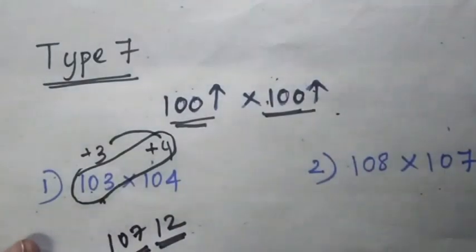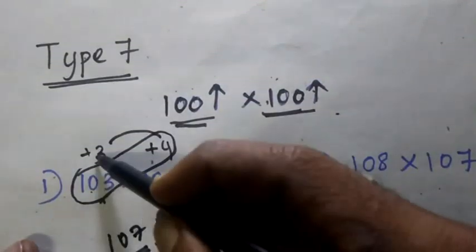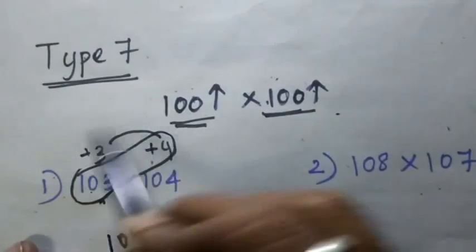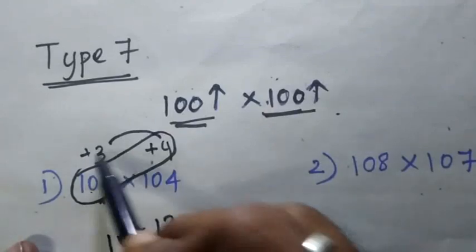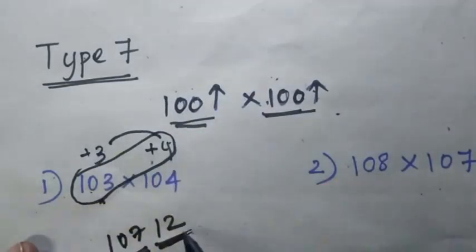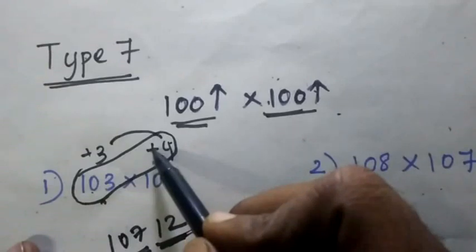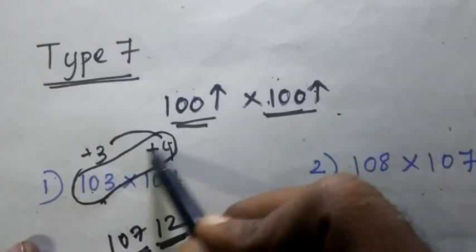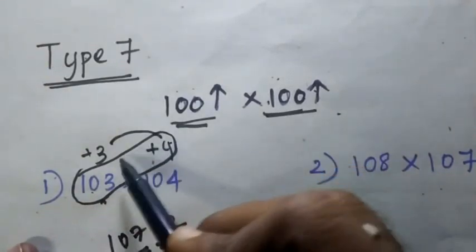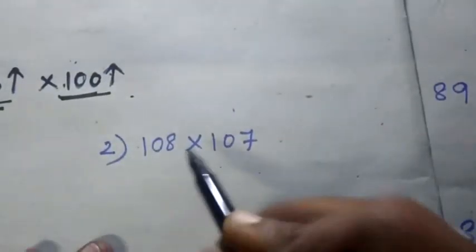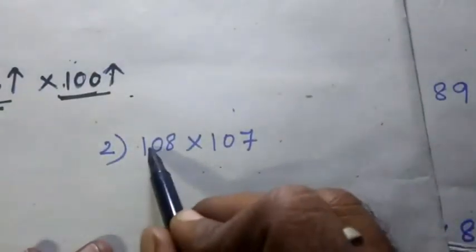First, values are the same, so we will multiply. 3 × 4 is 12. Then we will cross, add and subtract. Next question — this is the same, 8.